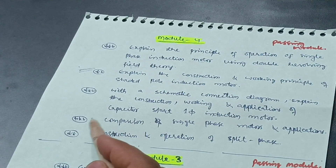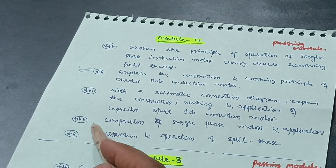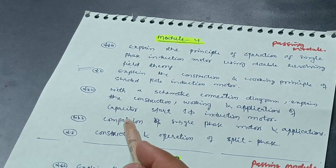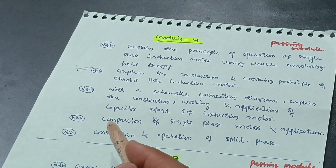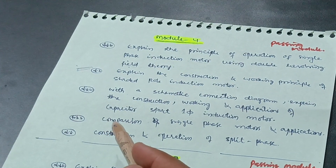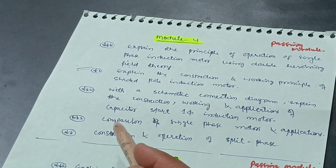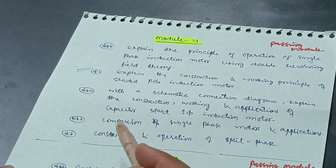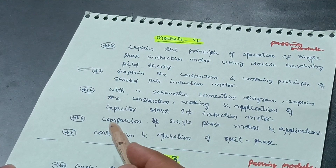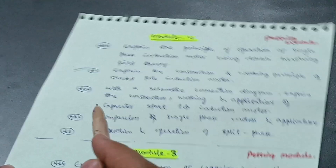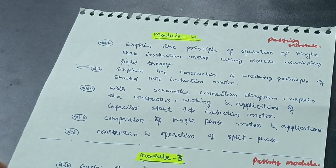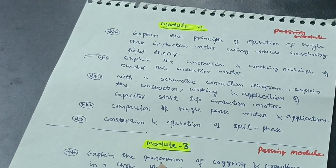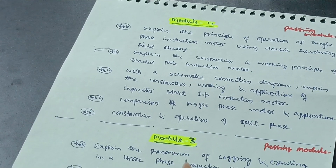Two more questions from module four are: comparison of single-phase motors and their applications, and the construction and operation of a split phase motor. You only need to cover these five questions from module four. There are a lot of numericals as well, but covering theory alone you can easily pass this subject. If you want to score higher, I will discuss the remaining modules.